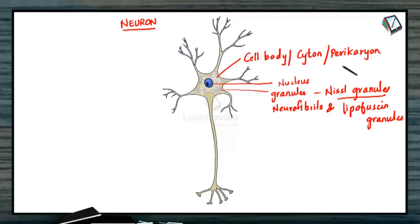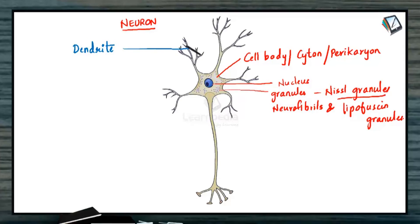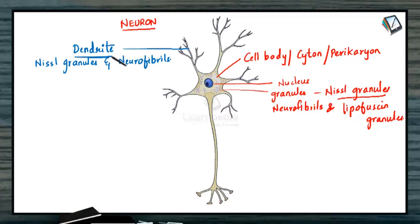The next part to discuss in a neuron is the dendrite. These dendrites are tapering — at the ends they are pointed — and they show branching. They are very small cytoplasmic processes or extensions. These dendrites contain the Nissl granules and also the neurofibrils. The dendrites are the portion where you receive an impulse; they are the receiving or input portion of impulses in a neuron, and hence they are also referred to as afferent processes.